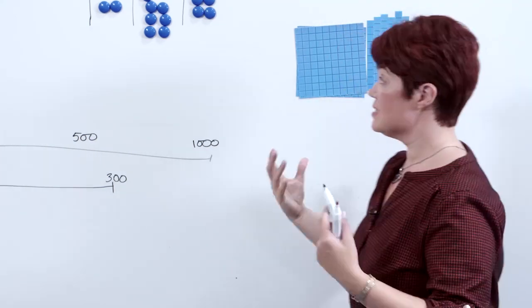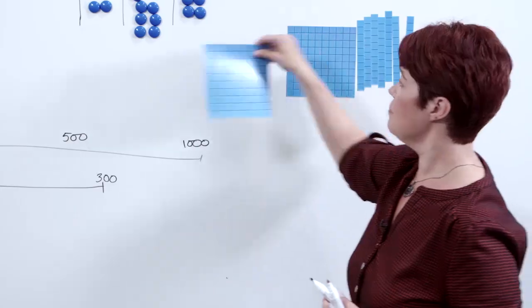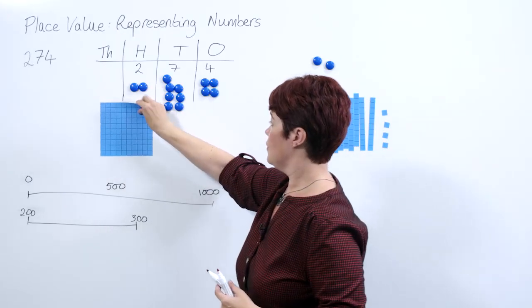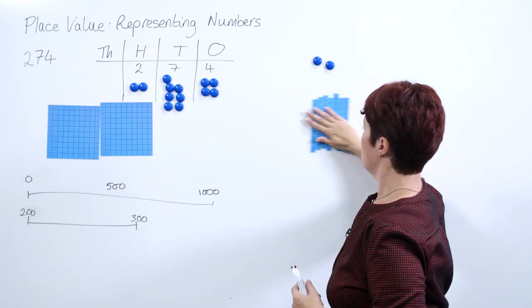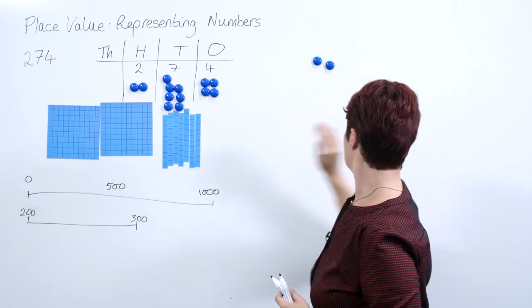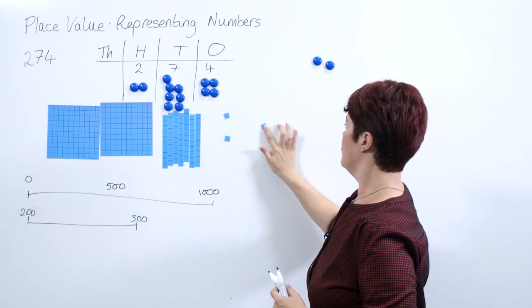If your school has Dienes blocks, again another way of representing this number. So we have 200 represented by our hundred square there, we have seven tens, and we have four ones.